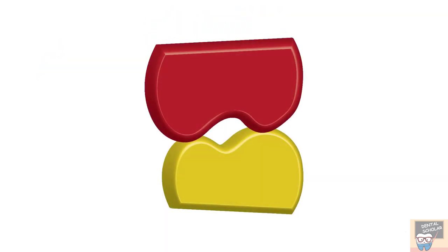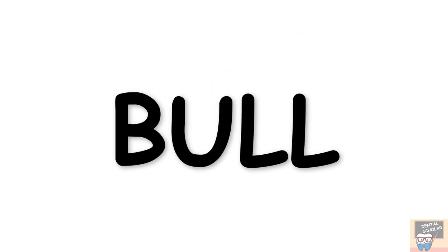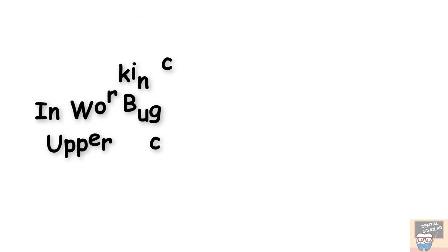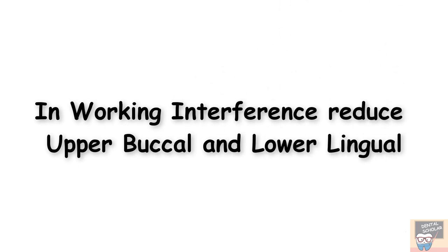Notice that the upper guiding cusp is buccal (buccal upper) and the lower guiding cusp is lingual (lower lingual). Writing these together gives BU and LL — buccal upper and lower lingual — which forms BULL's law. According to BULL's law, in working side interference you must reduce the upper buccal and the lower lingual cusps.